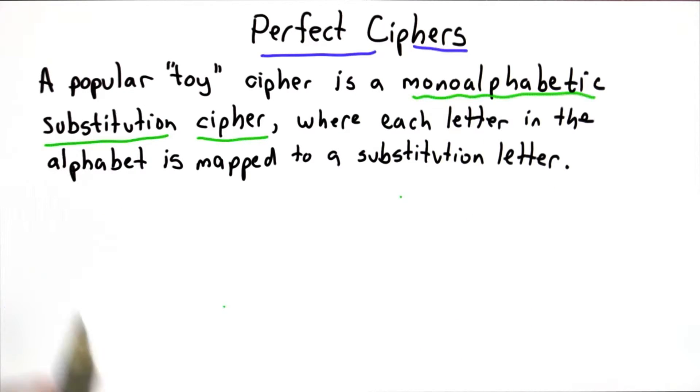This could be the same letter, could be any other letter in the alphabet, and decryption is done by the reverse mapping.